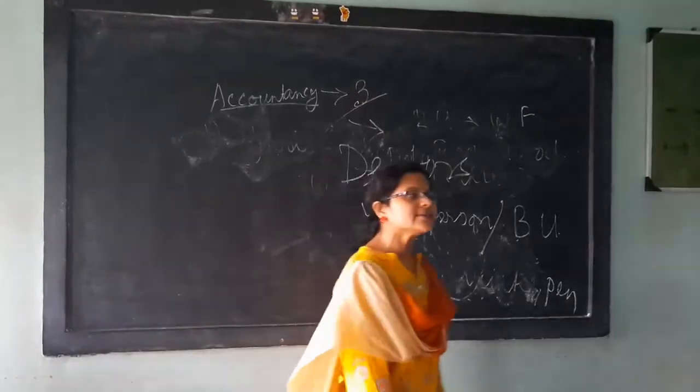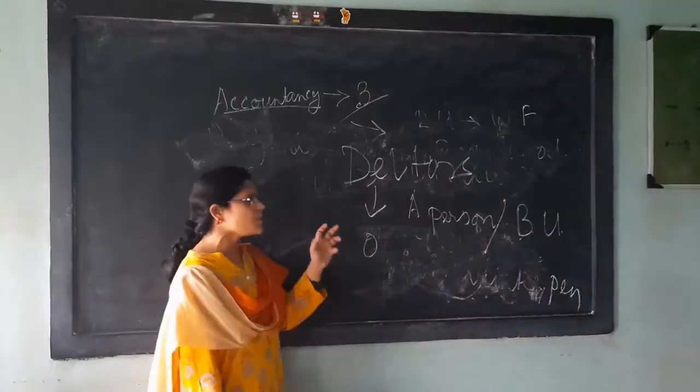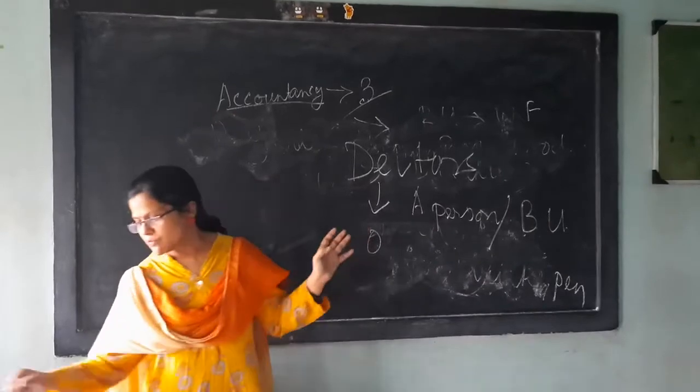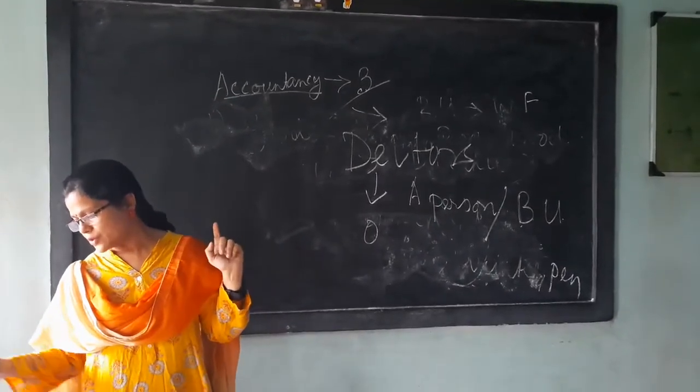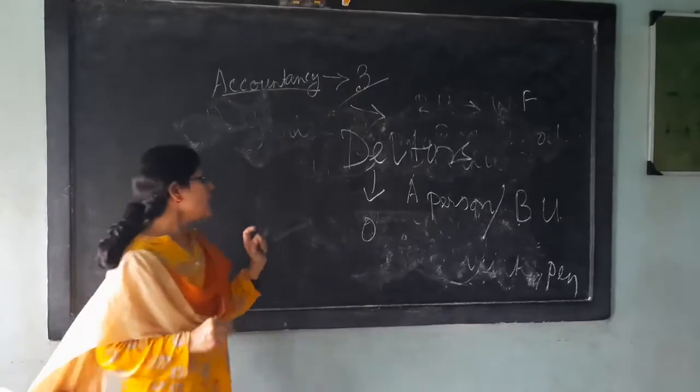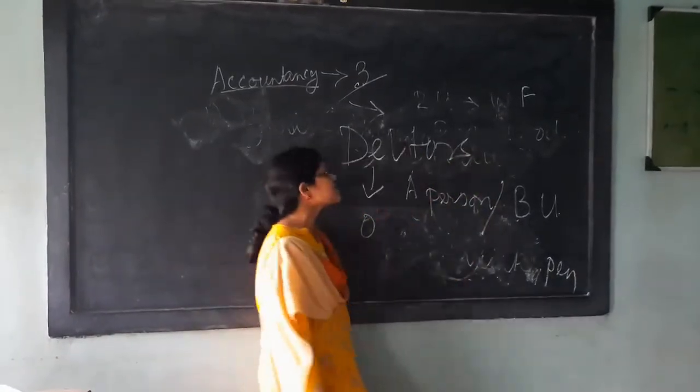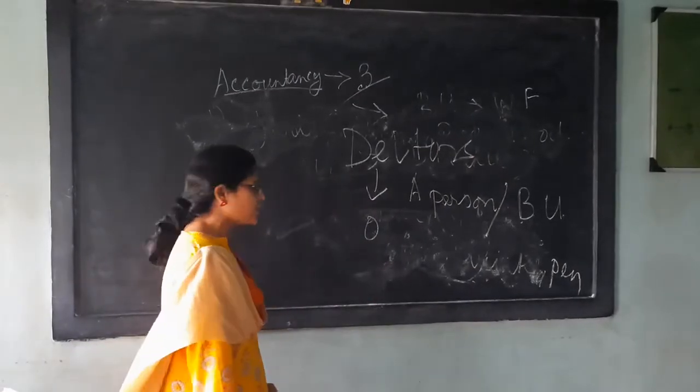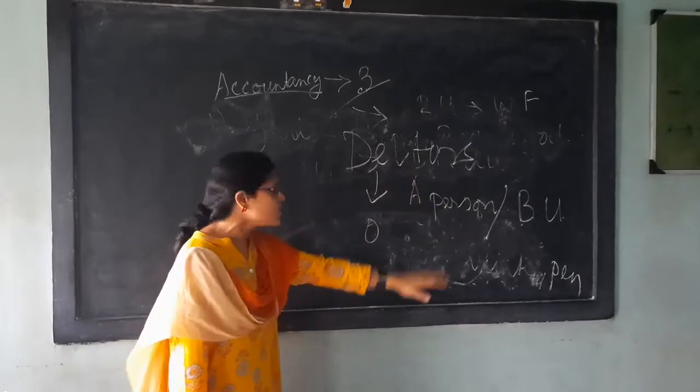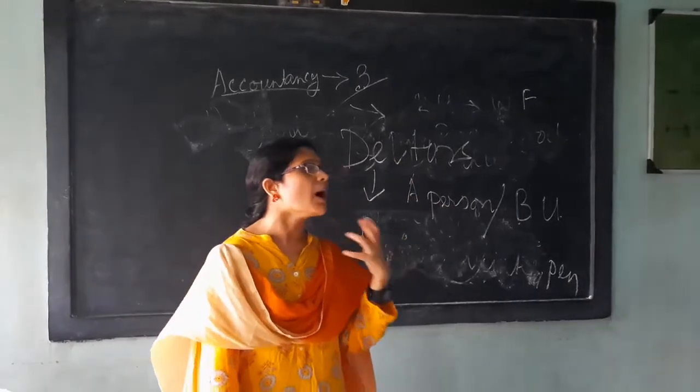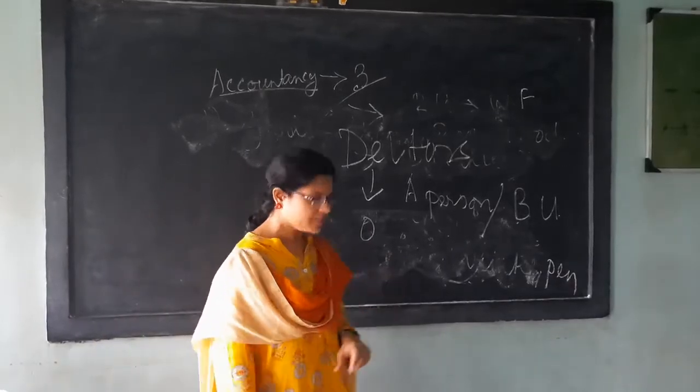For now you will see, if you will purchase Hanif and Mukherjee book for the theory part, you will see the page number 1.26 and 1.27, all information, all the definitions are available. The debtors use the person or the business community who owes money, means who gets money from the business, is known as the debtor.